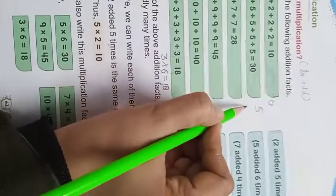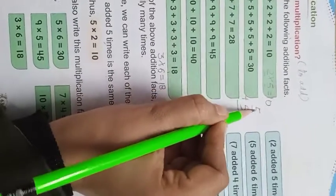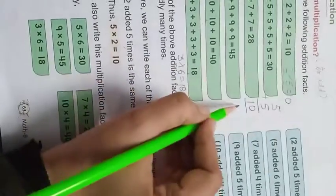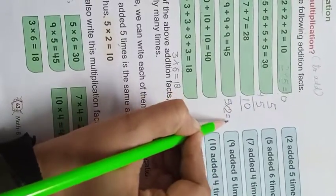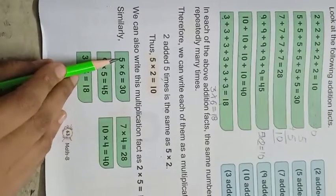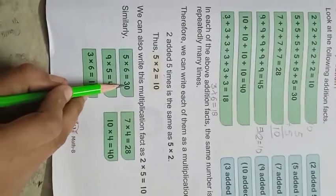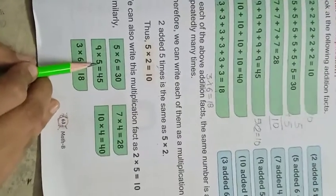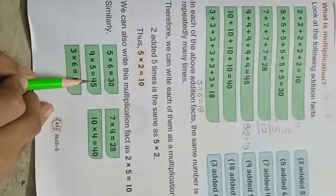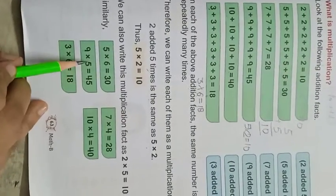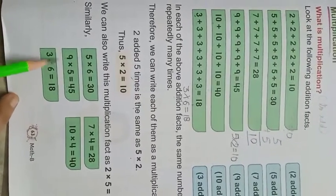Ab opposite karte hain: five ko hum two times likhenge. Five, number hai. Kitne times repeat hua hai? Two times. Answer hamein kya mila? Ten. Chahe aap two into five likhen, ya five into two likhen, answer same milega. It means five into six likhoge toh bhi aapko thirty milega; six into five likhoge toh bhi thirty milega. Yeh multiplication ki property hoti hai. Nine ko aap five times multiply karoge toh bhi forty-five hoga, or five ko nine times multiply karoge toh bhi forty-five hoga. Five sixes are thirty, six fives are thirty, nine fives are forty-five, five nines are forty-five, three sixes are eighteen, six threes are eighteen.